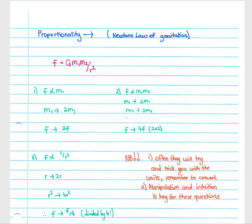We'll look at some of the questions related to proportionality and how we solve them, and the relationships we get from the formula with Newton's law of gravitation as well as the force in an electric field. Firstly, let's have a look at the force of attraction in a gravitational field. We have this formula which we will be given on our formula sheet: F, our force of attraction, equals G times mass one times mass two over r squared.